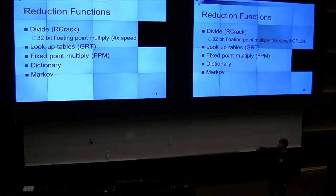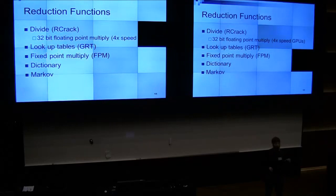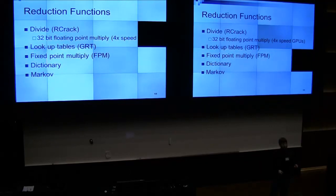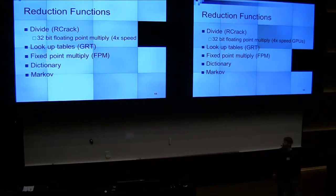Roughly about the same time Bitweasel was doing that, I thought: I can do multiply — integer multiply — instead of division. Basically what you do is you pretend your hash has a decimal point in front of it, then you multiply it by the number of characters in a character set, so the integer value in front of that decimal point is between zero and character set minus one. And you just keep doing that. But 32-bit floating point multiply is going to be faster. Also divide is more evenly distributed than either of the other two.